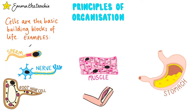Examples include sperm cells, nerve cells — which are also called neurons — and root hair cells, amongst others.